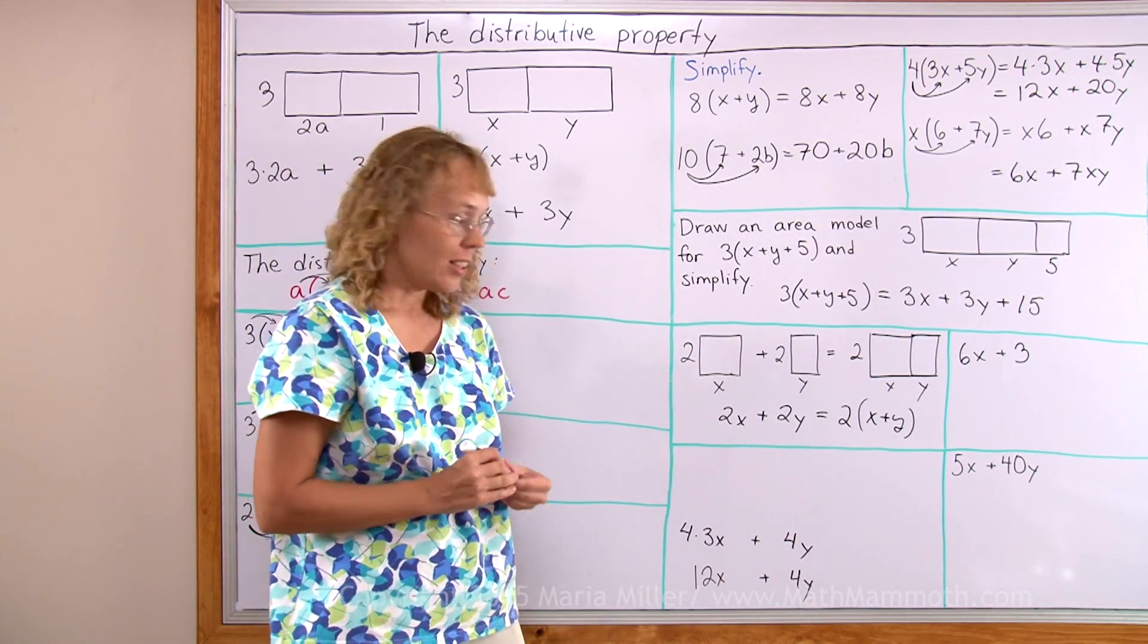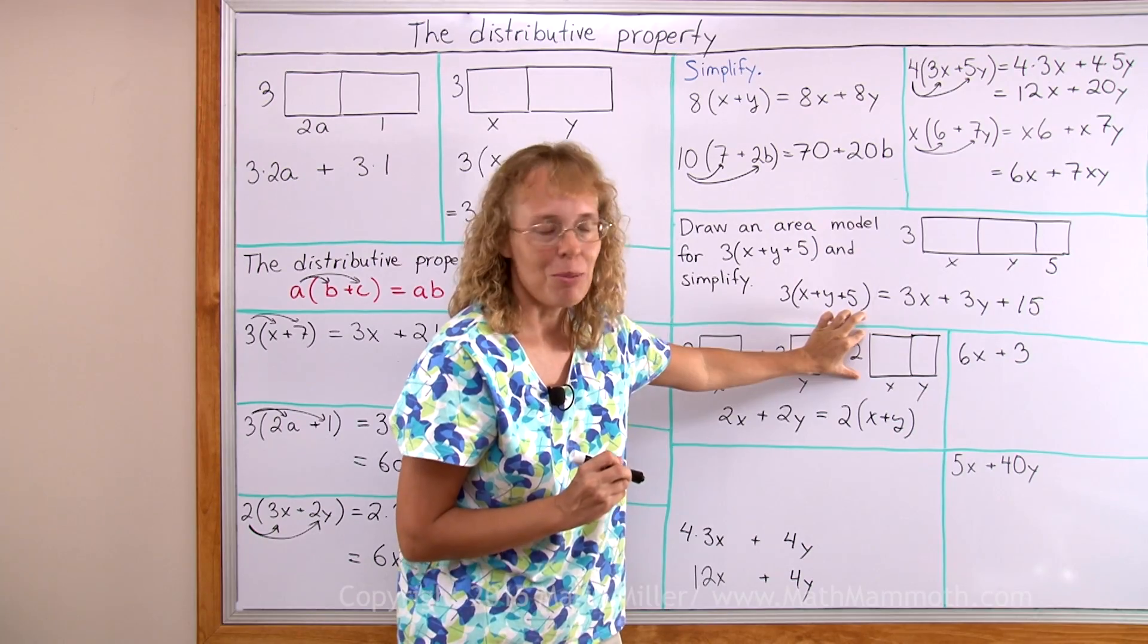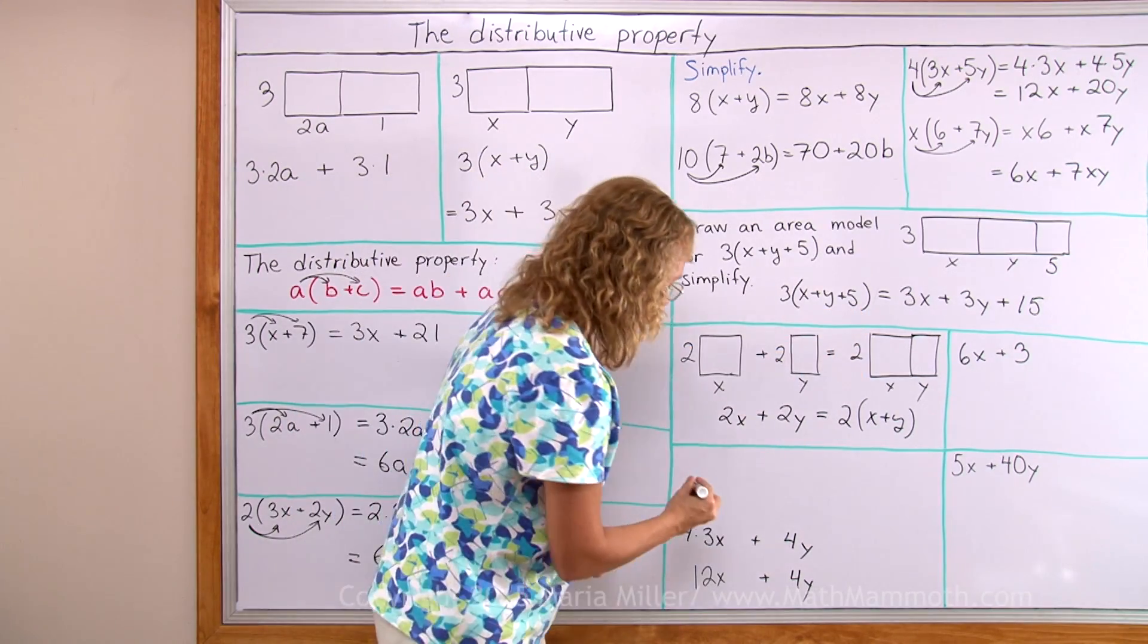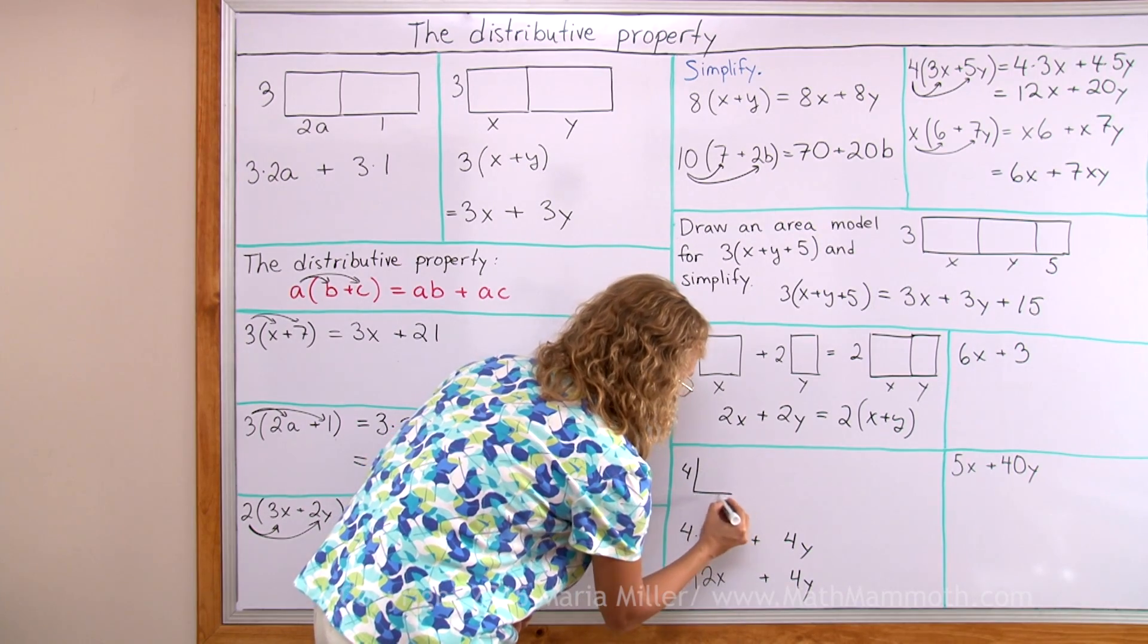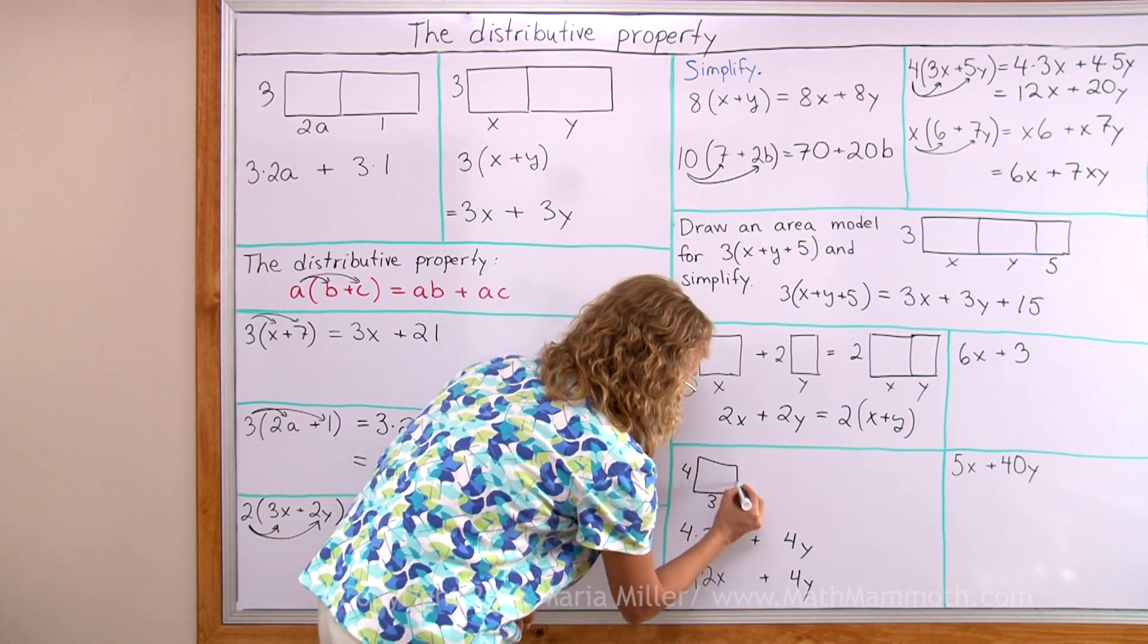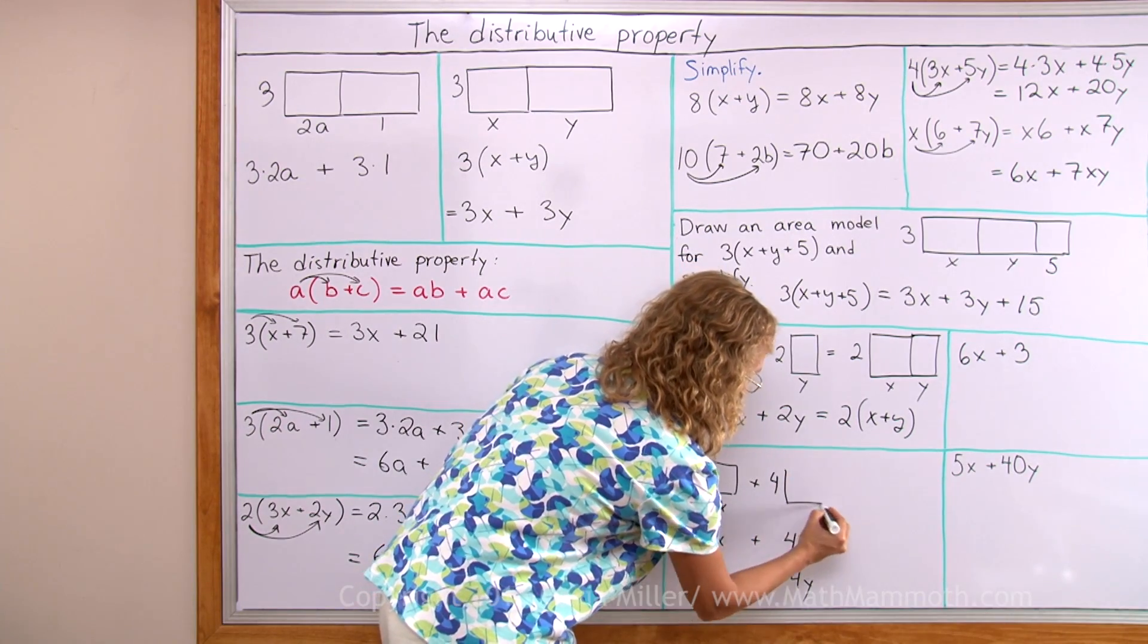Look, now I have 4, the common factor that's going to be this side of the common rectangle. And now let me draw this rectangle here, would be 4 this ways and 3x that right ways. And then this rectangle would be 4 and y.